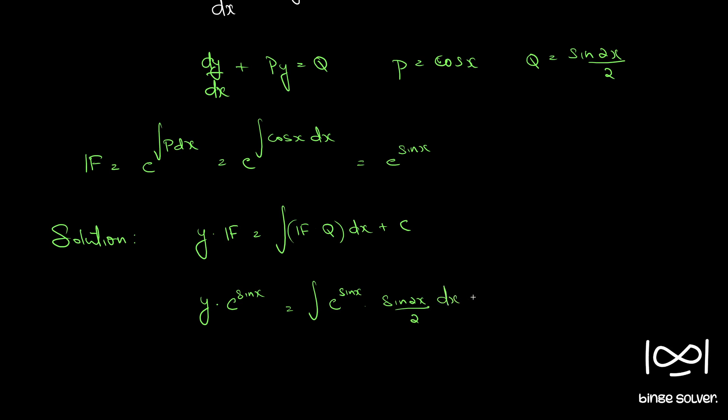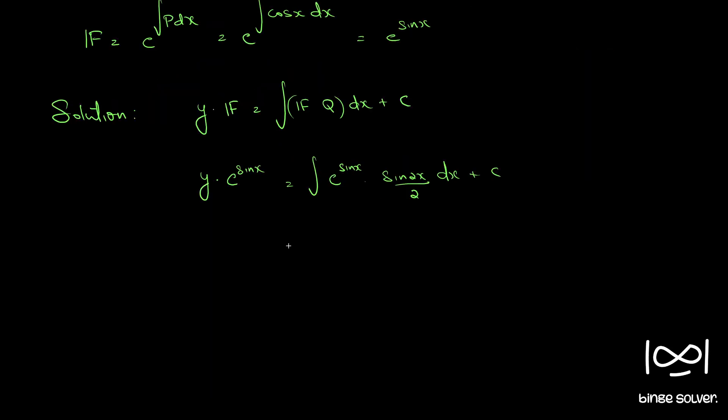Sin 2x we write as integral e raised to sin x into 2 sin x cos x by 2, so this 2 and 2 cancels. E raised to sin x into sin x into cos x dx. So we use substitution: sin x is equal to t.